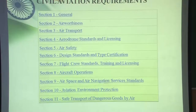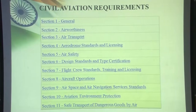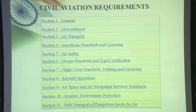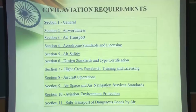The Civil Aviation Requirements issued by DGCA has various sections: Section 1 general, Section 2 airworthiness, Section 3 air transport, Section 4 aerodrome standards and licensing, Section 5 air safety, Section 6 design standards and type certification, Section 7 flight crew standards, training and licensing, Section 8 aircraft operations, Section 9 airspace and air navigation services standards, Section 10 aviation environment protection, Section 11 safe transport of dangerous goods by air. Aircraft maintenance is mainly concerned with Section 2, airworthiness.